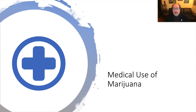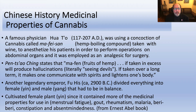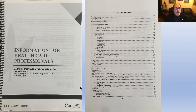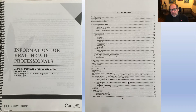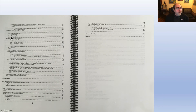Medical uses of marijuana is one of the major modules. We'll talk about the history of medical use going back 5,000 years in China, when cannabis was used for menstrual fatigue, gout, rheumatism, malaria, and constipation. For current use, we'll use a monograph called Information for Healthcare Professionals, put out by the Canadian government — a 200-page monograph with about 2,000 references. It covers the endocannabinoid system, clinical pharmacology, dosing, and potential therapeutic uses.